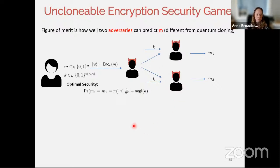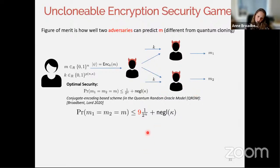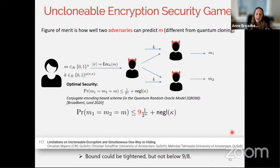In work with Sebastian Lorenz, we showed that a quantum encoding in the quantum random oracle model leads to the optimal probability of winning of 9 times 1 over 2^n plus some negligible function in the security parameter. At this week's QCrypt there is a poster on limitations of unclonable encryption and simultaneous one-way-to-hiding, which shows among other things that this bound could maybe be tightened, but not below 9/8.